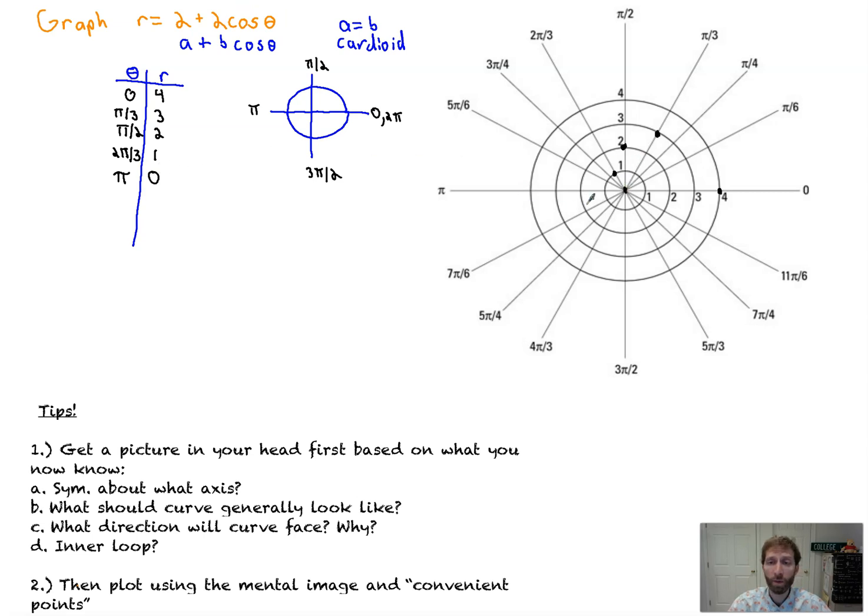And so finally, cosine will be most negative at pi. Cosine of pi is negative 1 times 2 is negative 2 plus 2 is 0. So we've got that first half. Now we know it's going to bounce back around and come out there because of the symmetry about the x-axis. The reason why we're not going to have an inner loop here is r can never be less than 0. Because the most negative that cosine will ever be, this whole value will ever be, is when cosine is at pi, which is equal to 0. That's because a equals b. So a can never be less than b. Therefore, we can never have an r value that is negative. So we'll never go in the opposite direction of an angle causing the inversion, that belly button, that loop, inner loop that we saw in the last bit.